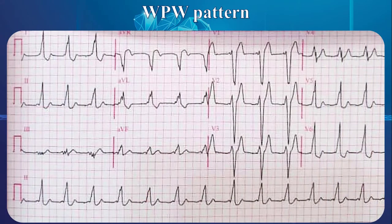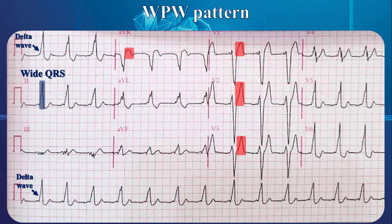The next EKG demonstrates WPW pattern. Thanks to delta wave, the complexes are wide. There are discordant ST elevations in V1 to V3 and AVR; discordant ST depressions are discernible in V4 to V6 and inferior leads as well. Like the previous strip, STT changes in this strip are because of wide complexes.